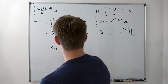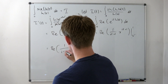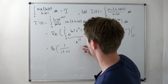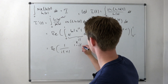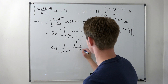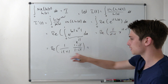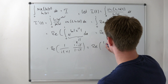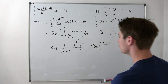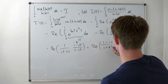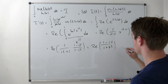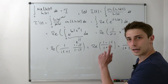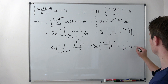We can expand this fraction by the complex conjugate (1 − it) over (1 − it). The denominator is just a norm, so we end up with the real part of (1 − it) over (1 + t²). Taking the real part gives us 1 over (1 + t²). And don't forget, this is I prime of t.